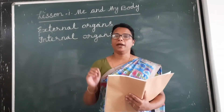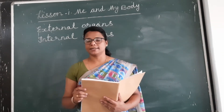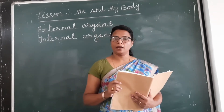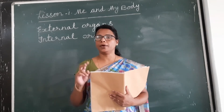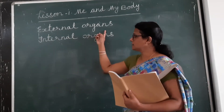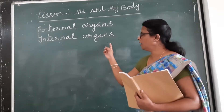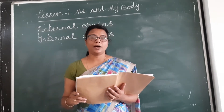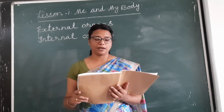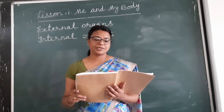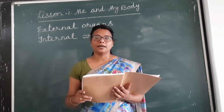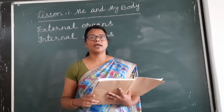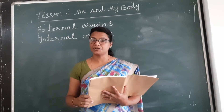Our body is made up of a number of parts. These parts are also called organs. These organs can be divided into two categories: external organs and internal organs. The parts of our body that are visible to us are called external organs.